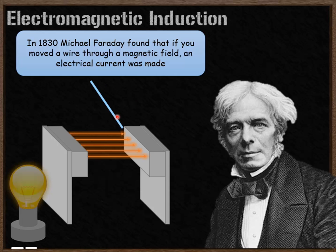As I pass this wire through the magnetic field, watch what happens to the light bulb this wire is attached to. As it passes through that magnetic field, an electrical current is made. That was discovered by Michael Faraday in 1830.